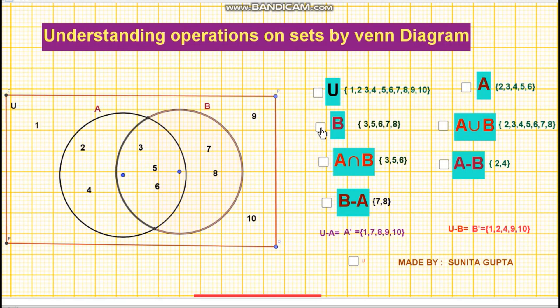This is our set B. The shaded region as shown on your screen: 3, 5, 6, 7, and 8.